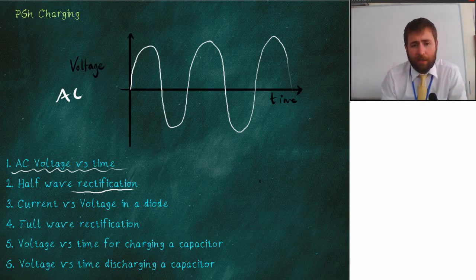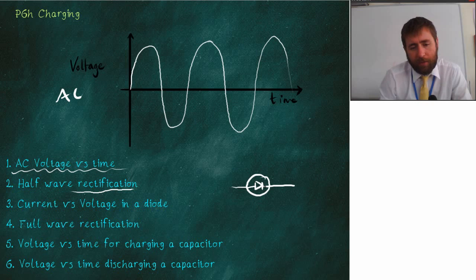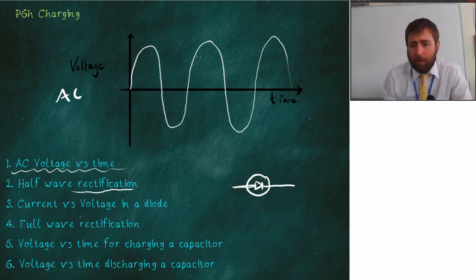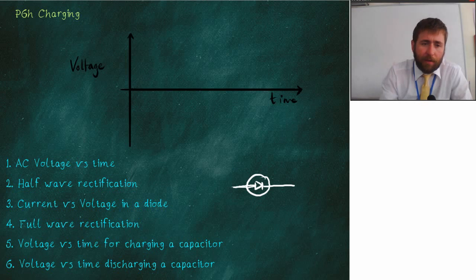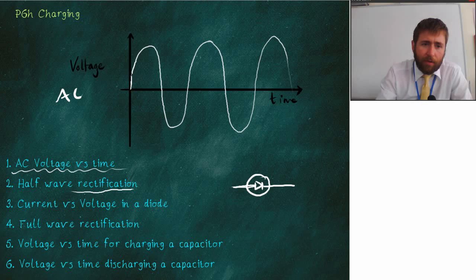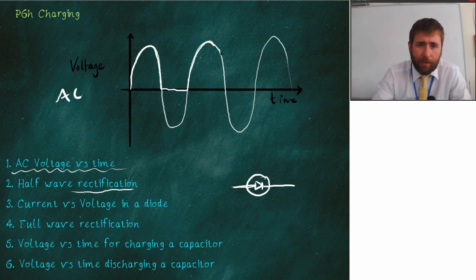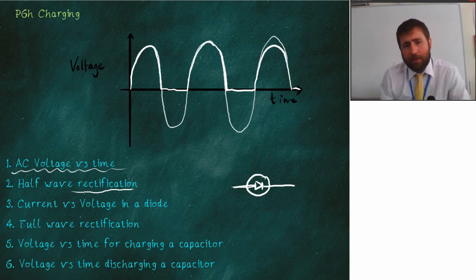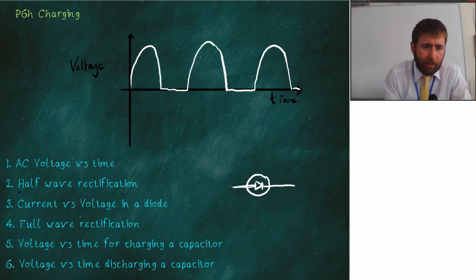AC into DC — what we do is we use something called a diode. This is the symbol for a diode in a circuit. It looks a little bit like a play symbol, and I always remember the current will flow in the direction of the play but will pause in the direction of the pause sign. So a diode only works in one direction. The positive goes through the diode in the positive direction, but the diode stops current from flowing in the negative direction. So you end up with a graph like that, and that is called half-wave rectification.